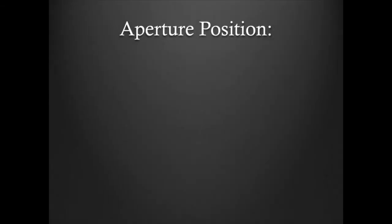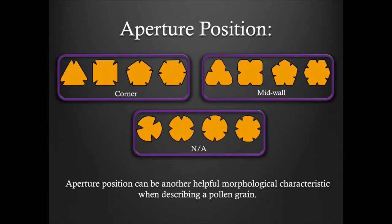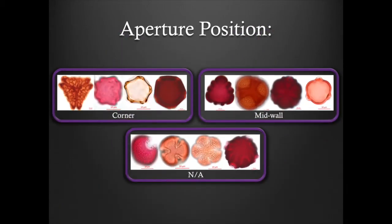Aperture position. Once you are able to determine a grain's orientation based on the presence of apertures, you can further morphologically describe your grain based on the position of the apertures when observed in the polar orientation. For angular grains, the apertures may lie on the corner of the grain, or they may fall mid-wall. For grains that are circular, elliptic, or lobate, this morphological characteristic would be considered NA, or not applicable. Please take a moment to look at some examples provided for each category.